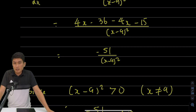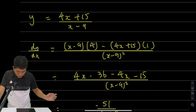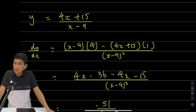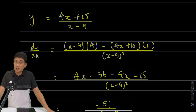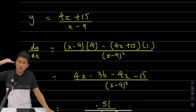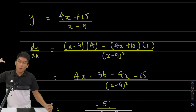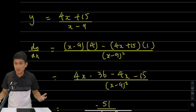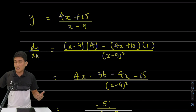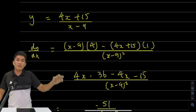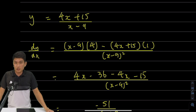Next, we should be able to determine whether the equation given to us, y, is an increasing or decreasing function. An increasing or decreasing function just means the graph — is it going downwards? If it's going downwards, then it's a decreasing function because as x increases, y decreases. Or if as x increases, y also increases, that will be an increasing function.